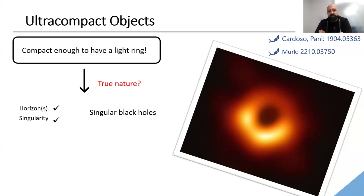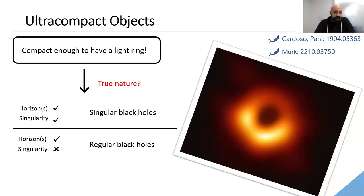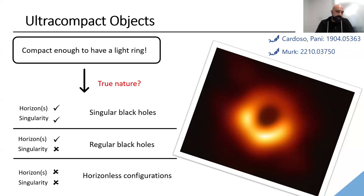Both singularities and horizons are problematic: singularities signal the breakdown of general relativity, and horizons cannot be observed with quasi-local means — we can't design an experiment of finite duration within a finite region that determines an event horizon is present. The second possibility is regular black holes, objects without singularities but with horizons, expected as outcomes of quantum gravity theories. However, there are mass inflation instabilities associated with the inner horizon in static cases.